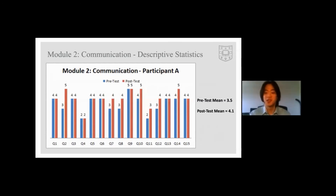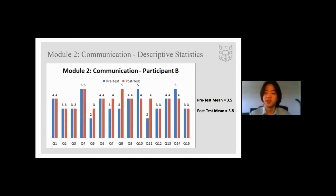For module two, communication, participant A demonstrated the greatest self-perceived improvement for the question about knowing appropriate times to enter a conversation. Out of all three modules, this participant's lowest mean pre-test and post-test scores were from this module. However, comparing the difference between mean post-test and pre-test scores for each module, participant A demonstrated the greatest self-perceived improvement on average from this module. Participant B demonstrated the greatest improvement on questions about being aware of another person's body language and being comfortable in social situations, and had their highest mean scores across all modules here.